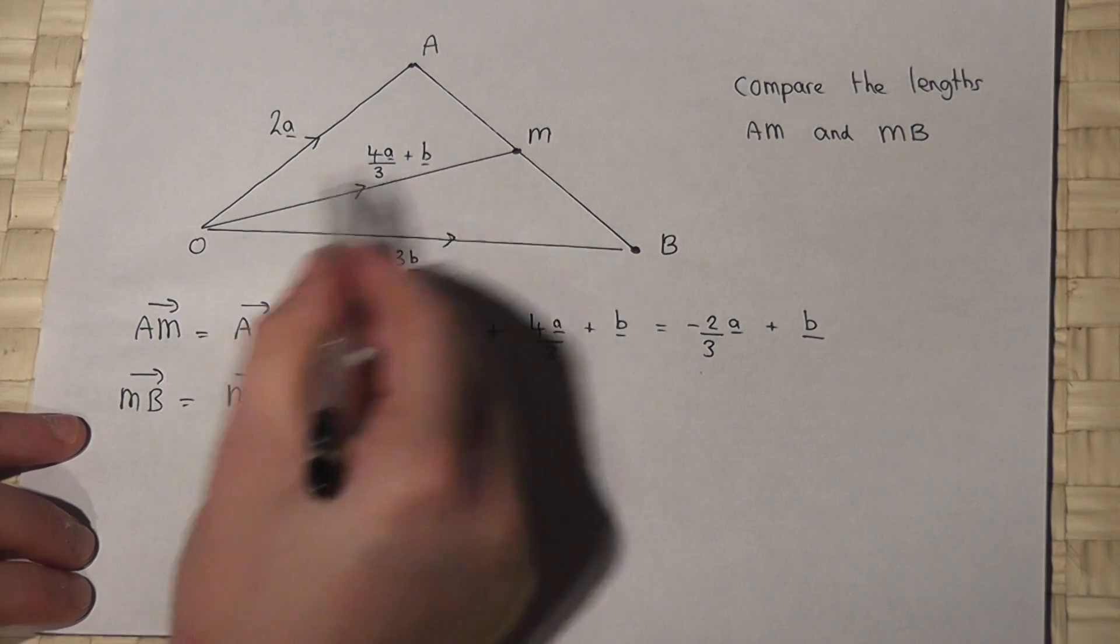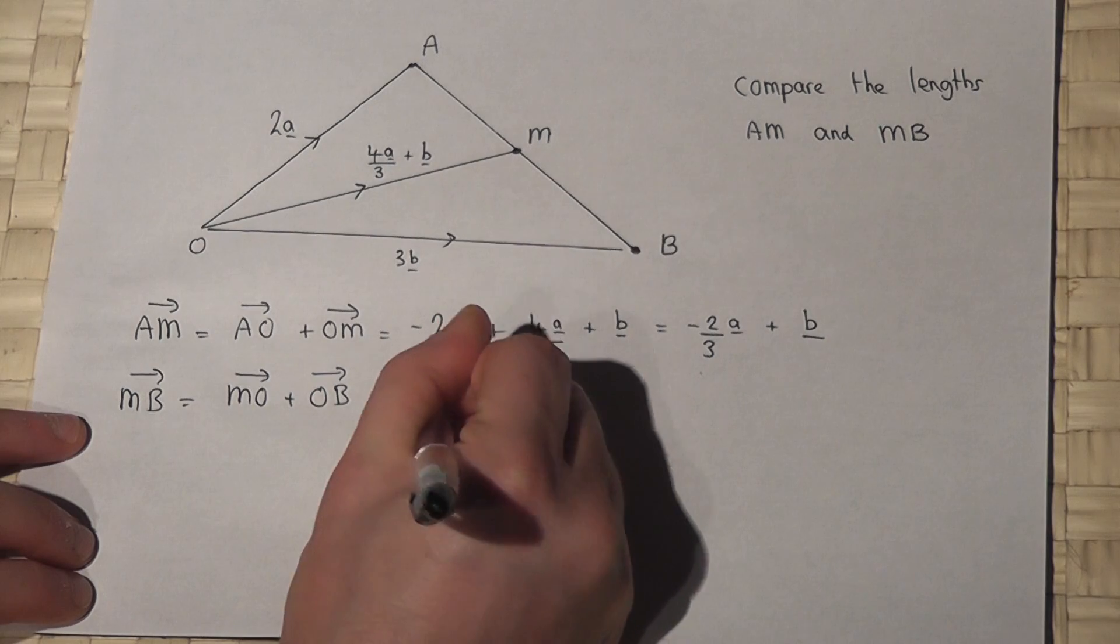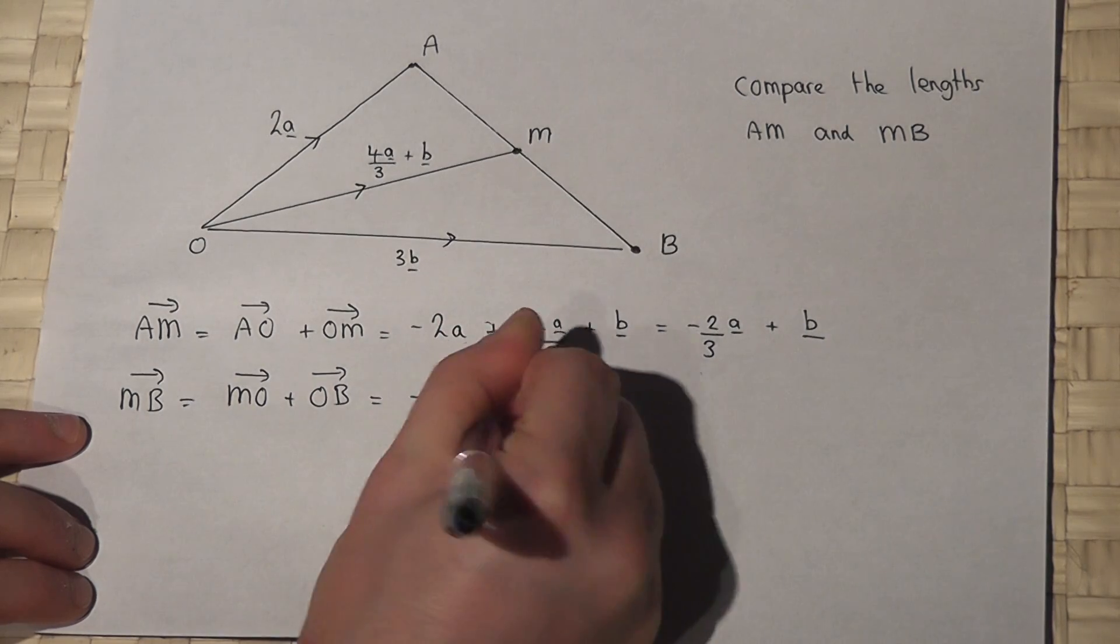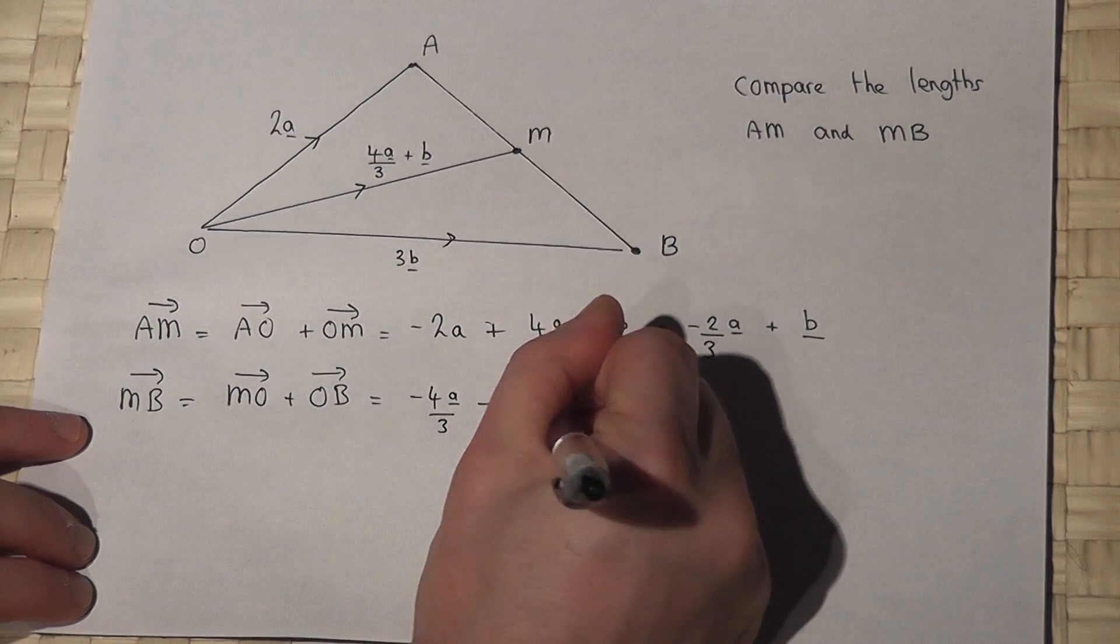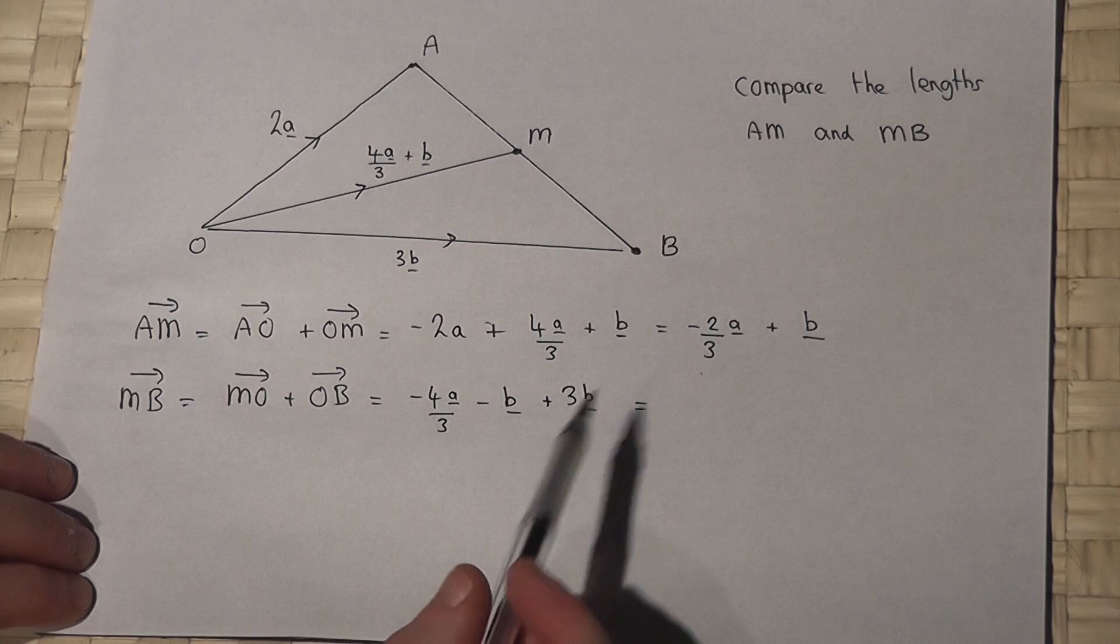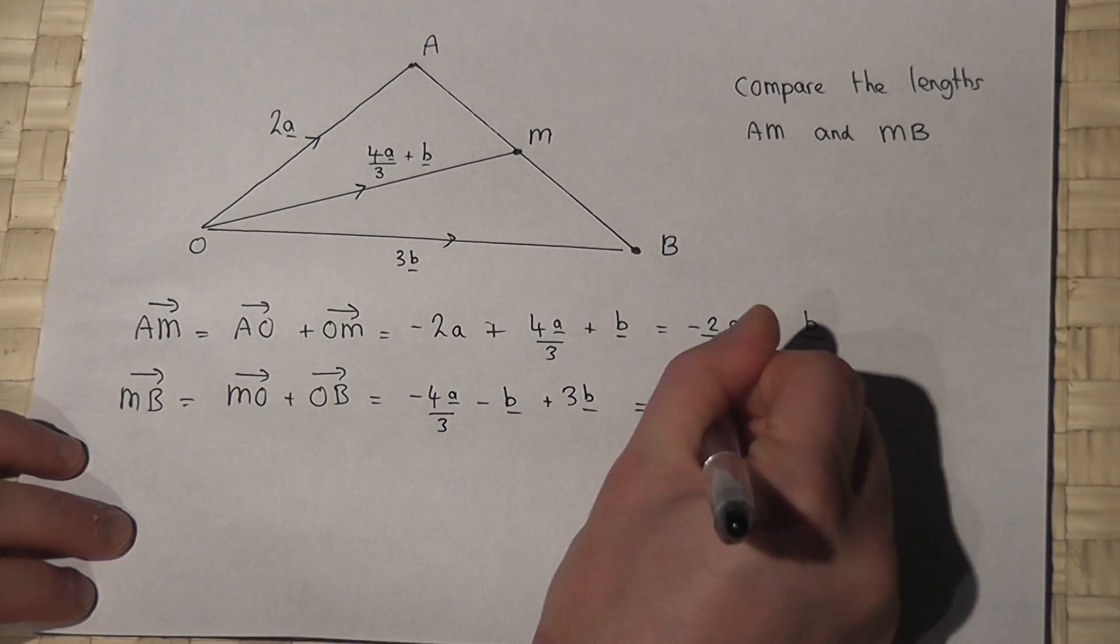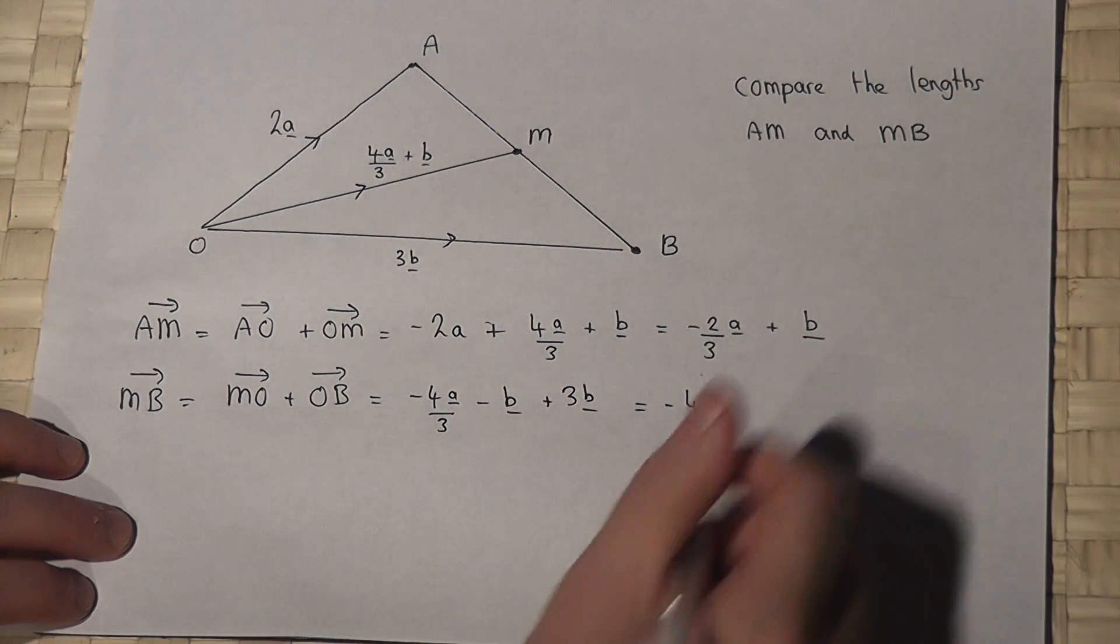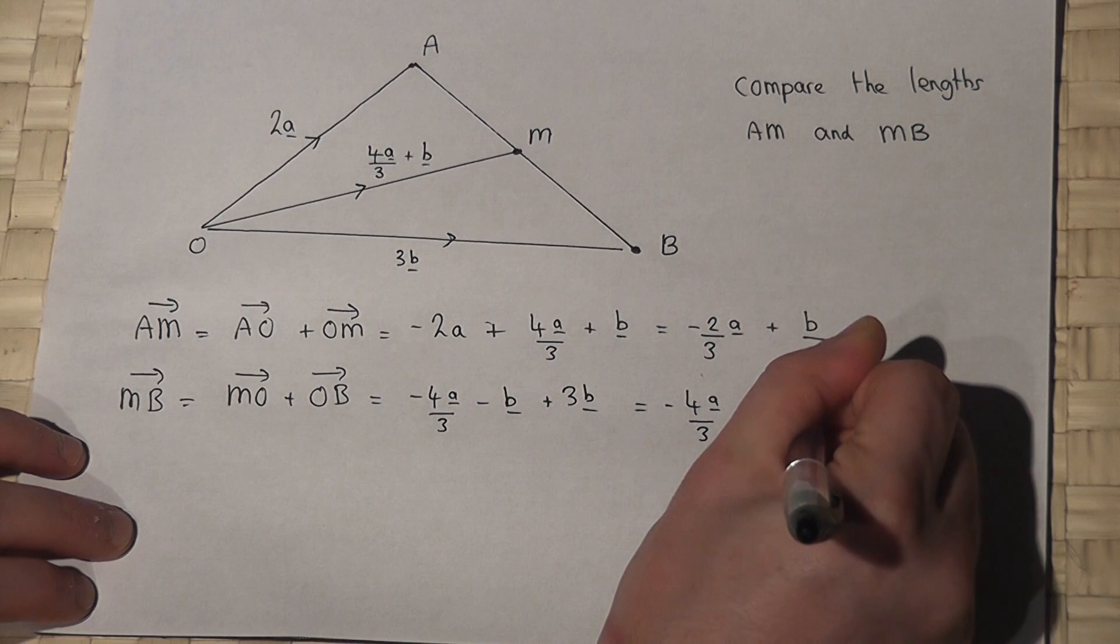Now to get from M to B I can go from M to O and then from O to B. So M to O is negative 4 thirds a negative b. So we go down backwards plus 3b. And when this is simplified we have negative 4 thirds a. However, minus b plus 3b is plus 2b.